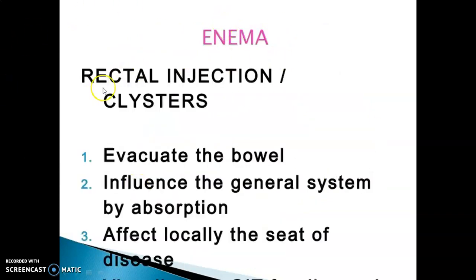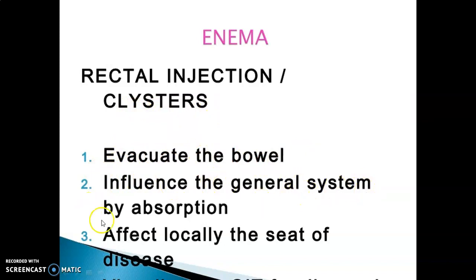Enema, also known as rectal injection or clysters, is used to evacuate the bowel, influence the general system by absorption, and to affect locally the seat of disease.